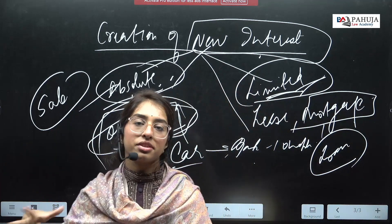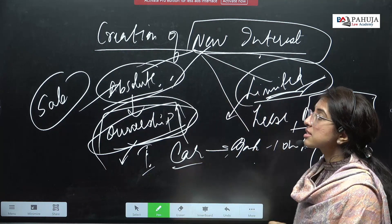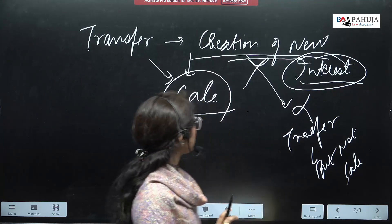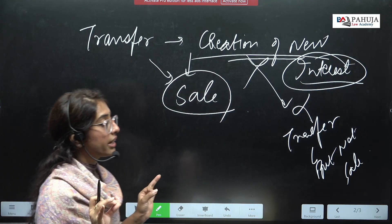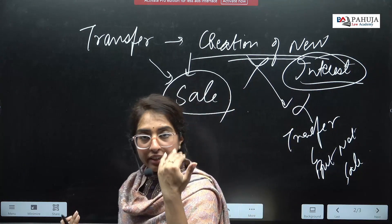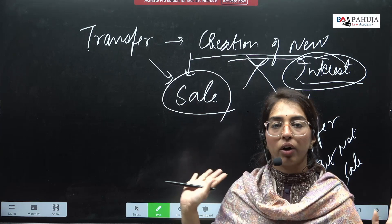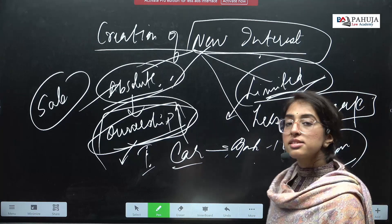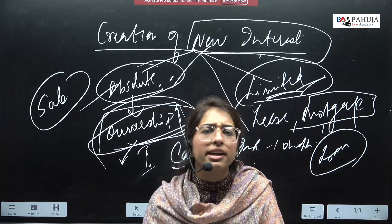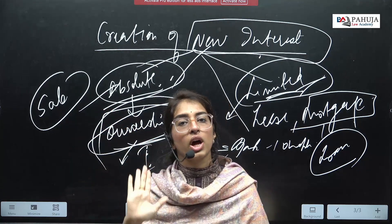First transaction: you went to a showroom, paid full cash of 10 lakh rupees and took the car — absolute interest created. You are the absolute owner. Second transaction: you went to a showroom, took a bank loan of 10 lakh rupees — the showroom got the money, a new interest was created in the second transaction too, but was it absolute interest? No — it was limited interest. If you cannot repay the bank loan, the bank will take back the car. So if limited interest is created, it doesn't mean it is not a sale. The simple litmus test for sale is creation of new interest — wherever you see a new interest being created in your favor, that transfer or transaction will be a sale. It does not matter whether the creation of new interest is absolute or limited; for sale, there simply has to be creation of new interest.